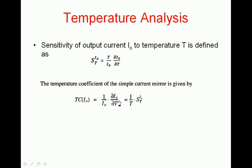We can replace ∂I0/∂T from the sensitivity expression. From that, ∂I0/∂T equals I0 divided by T times sensitivity. Substituting back, I0 cancels out, and the temperature coefficient of I0 becomes 1 divided by T times the sensitivity S_I0(T).